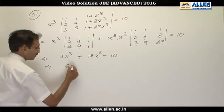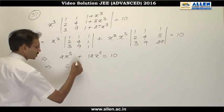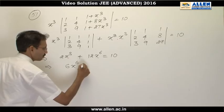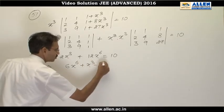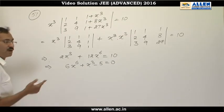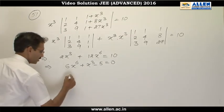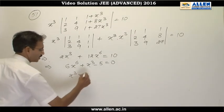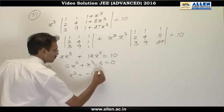Divided by 2 we will have a quadratic in x cube: 6x raised to the power 6 plus x cube minus 5 equals 0. Sum of the roots is minus 1 by 6 and product is minus 5 by 6. Therefore x cube must be minus 1 and 5 by 6.